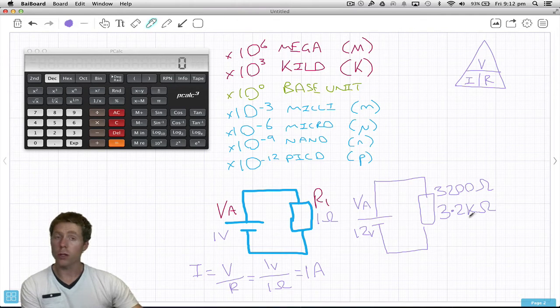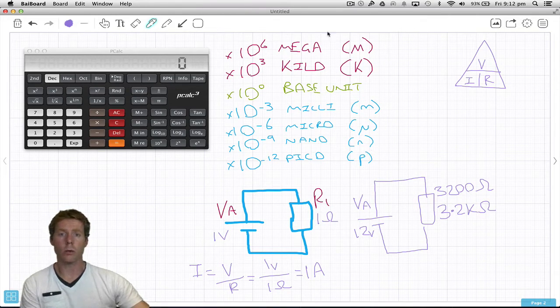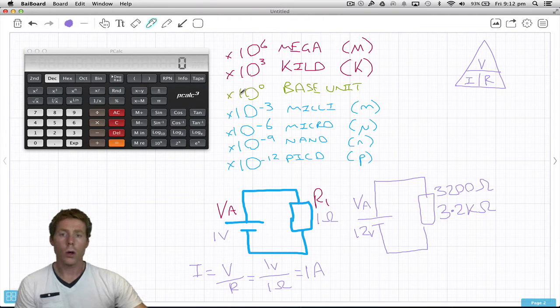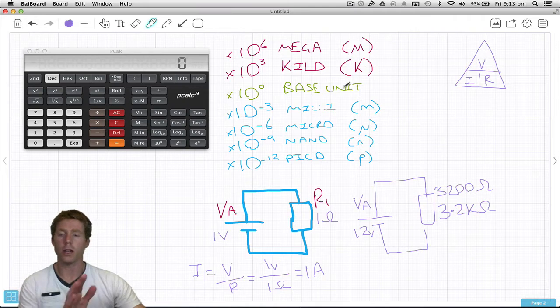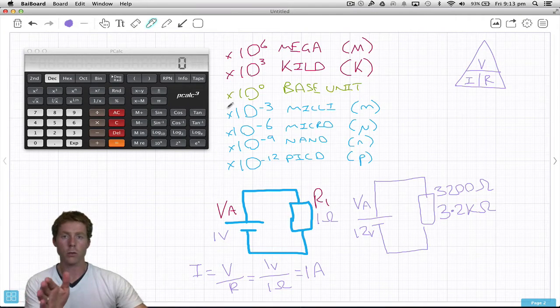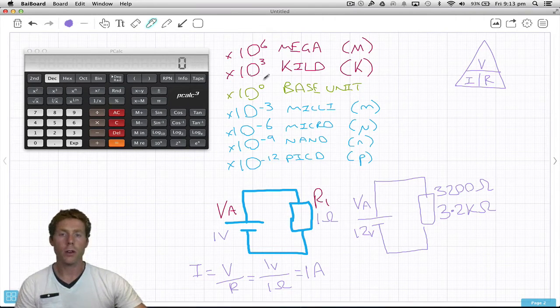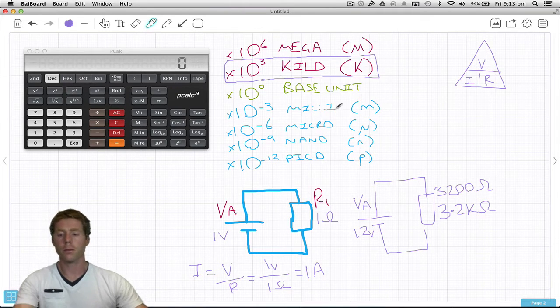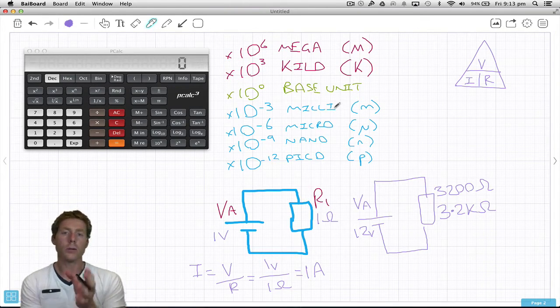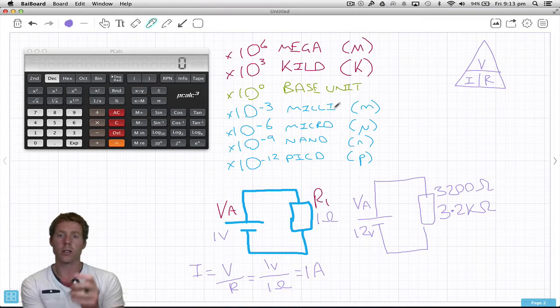The k represents 1000. If we look at this table I've drawn up, we've got times 10 to the 0, which is the base unit. We'll get into the exponent function in a second. Times 10 to the 3 is kilo. So times 10 to the 3 is actually times a thousand.